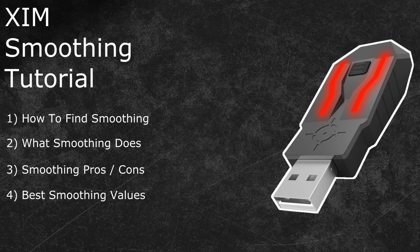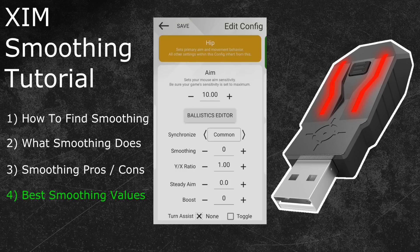Finding the right balance between a smoothing value that removes stutter or increases aim assist without adding negative effects can be tricky. In the fourth topic I will show you which values work best. The smoothing feature has a strength slider in the ZIM manager with a possible value range from 0 to 20 — a value of 0 deactivates smoothing while 20 is the maximum strength. A smoothing value of 1 to 3 is perfect if you want to slightly increase your aim assist without any disadvantages; your mouse movements will feel identical to using no smoothing, with the exception of a slightly stronger aim assist.